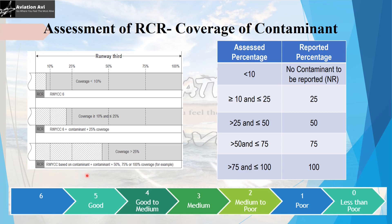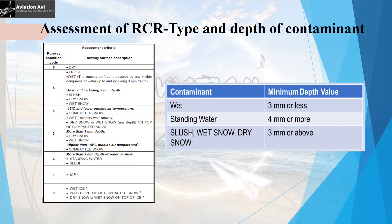This image is taken from ICAO Doc 9981. Now that we have assessed the runway condition code for each third and the coverage of contaminant, it is time to assess the depth of the contaminant — either 3mm or less, or more than 3mm. This assessment can be done using coins of specified width or other equipment deemed appropriate by the aerodrome operator.